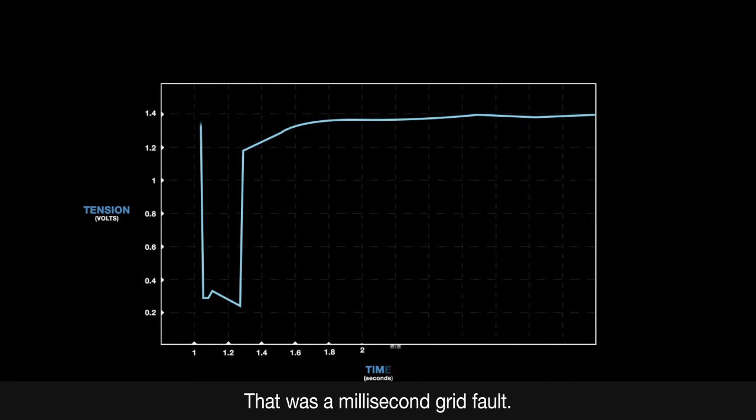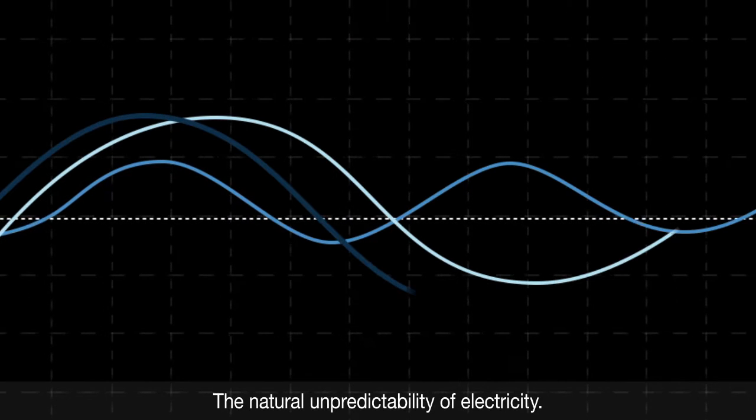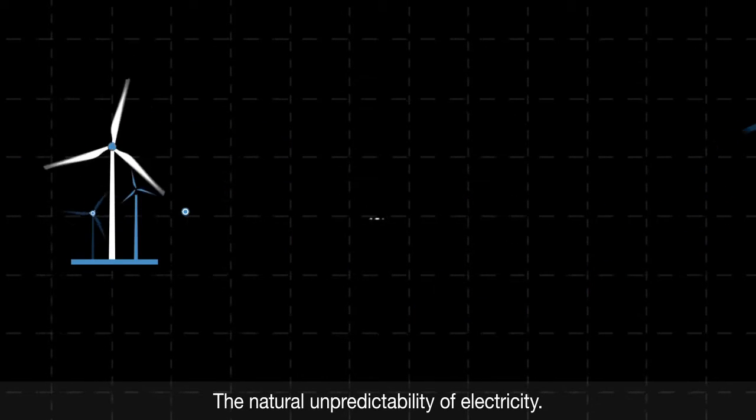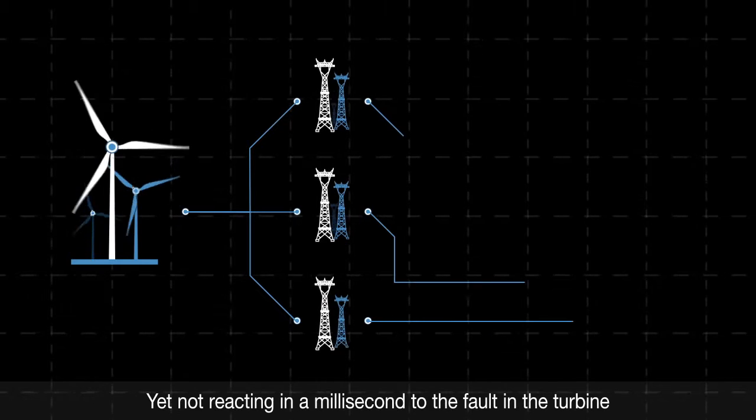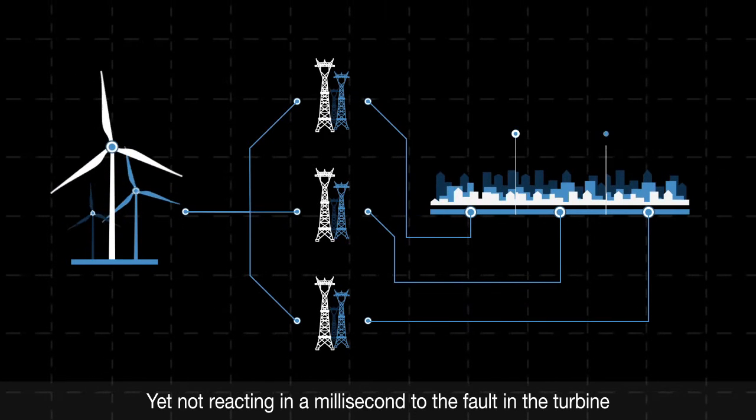What was that? That was a millisecond grid fault. The natural unpredictability of electricity. Yet not reacting in a millisecond to the fault in the turbine could cause even bigger grid instability.